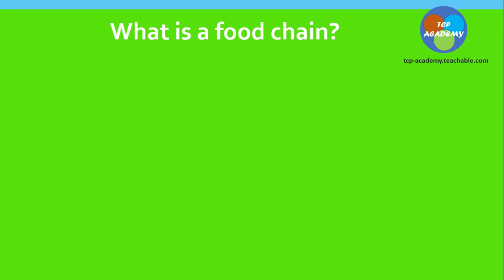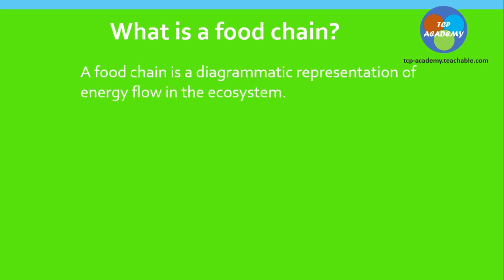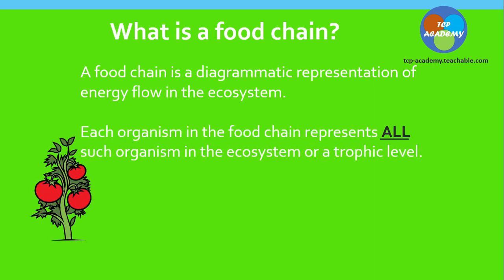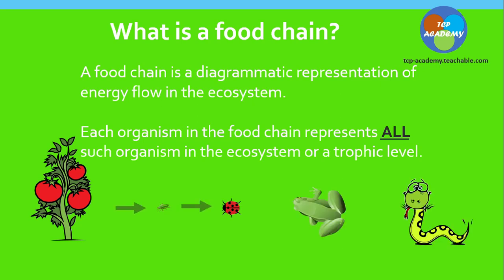What is a food chain? A food chain is a diagrammatic representation of energy flow. It pretty much shows how energy, nutrient, or food moves through the ecosystem from one organism to another. Each organism in the food chain represents all such organisms in the ecosystem.